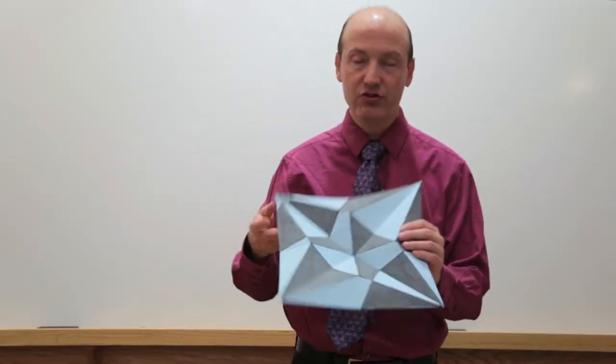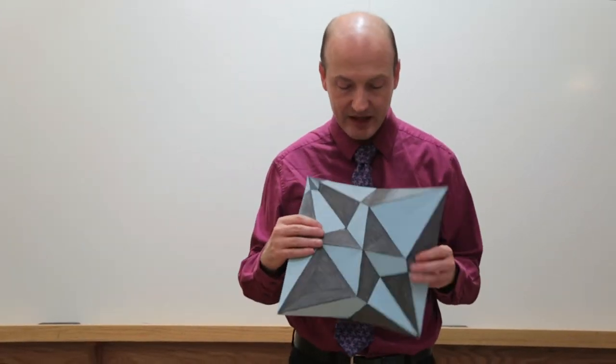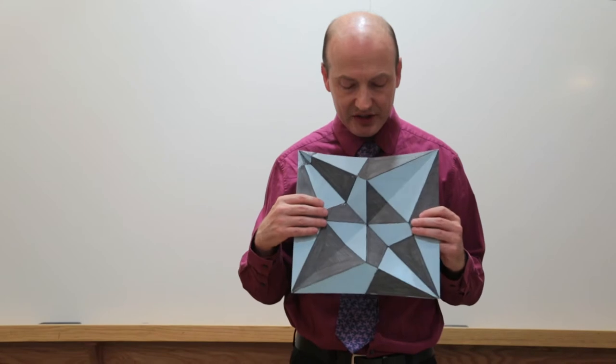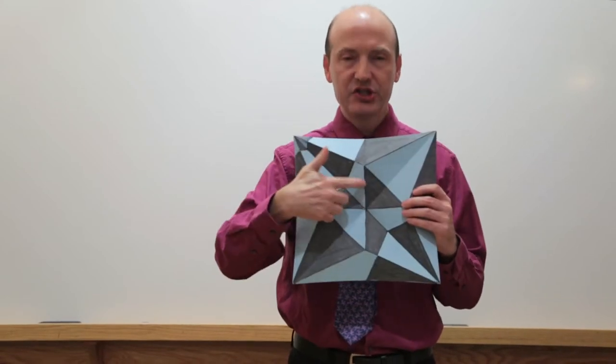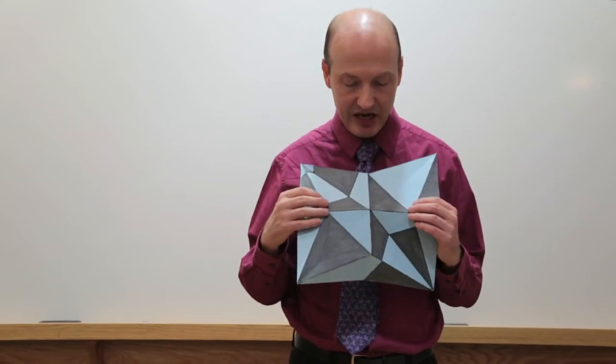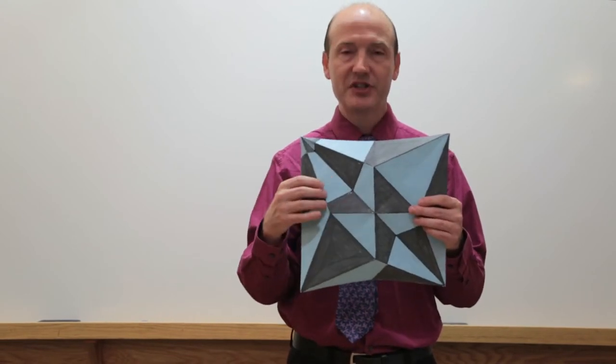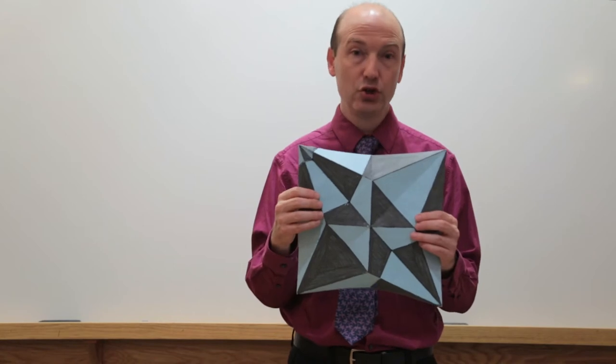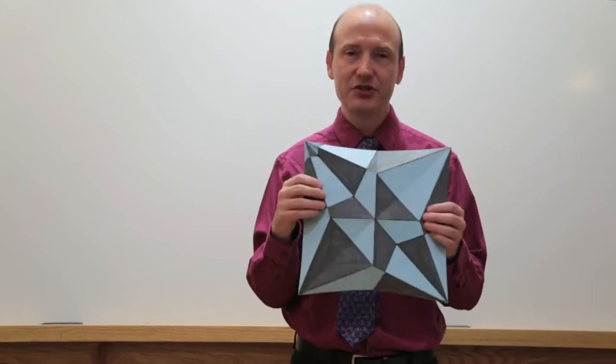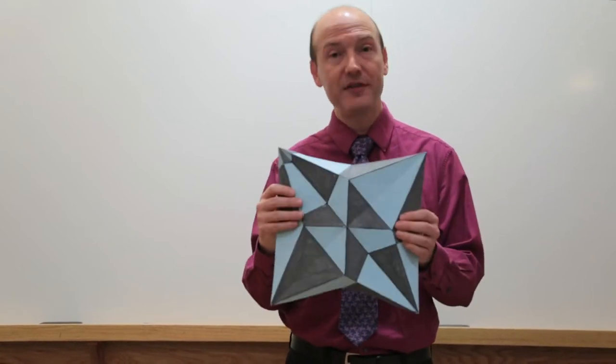Well, it turns out that any crease pattern from a flat origami model can be two face-colored. That is, if I was to take that crease pattern and draw all the crease lines, then you can always color the regions between the creases in two colors so that no two regions that border on a crease line have the same color. That's what's called two coloring. And this is useful for origami. So you can prove that.